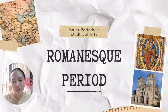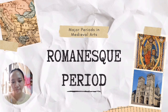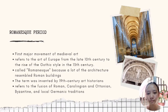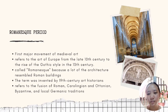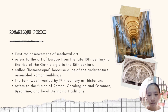Good day everyone, I am Lionel Vanus and let's move on to the Romanesque period. Romanesque art is the major art movement of medieval art. It also refers to the art of Europe from the late 10th century to the rise of the Gothic style in the 13th century. It is called Romanesque because a lot of architecture used symbols from Roman buildings.